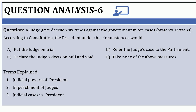Today we have a simple question. A judge gave a decision six times against the government in ten cases — that is in cases like state versus citizens. According to the constitution, under these circumstances, what is the action the president can take regarding this judge?